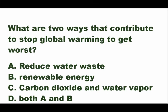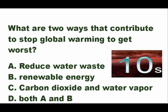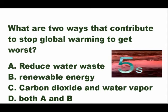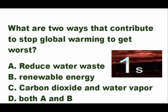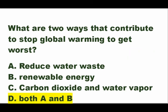Next question: what are the two ways that contribute to stopping global warming from getting worse? Is it A — reduce water waste, B — renewable energy, C — carbon dioxide and water, or D — both A and B? The answer is letter D — both reduce water waste and renewable energy are the two ways that contribute to stopping global warming from getting worse.